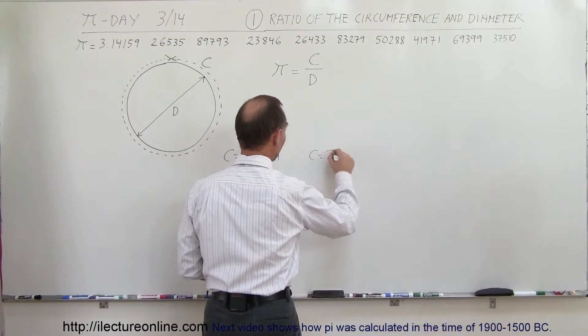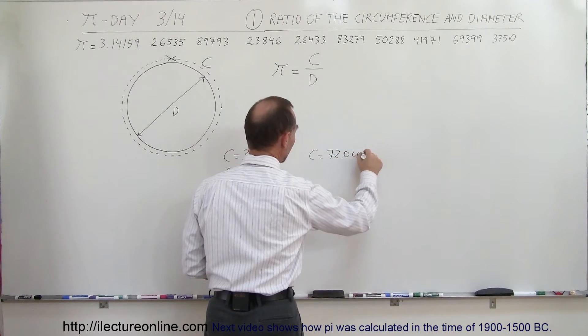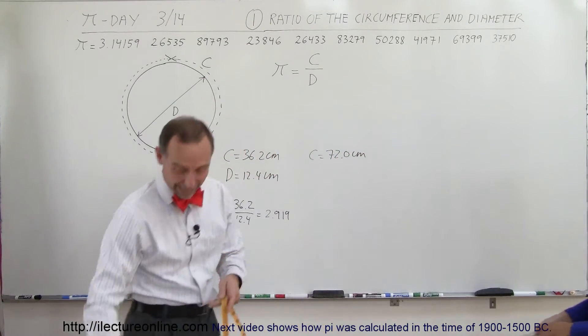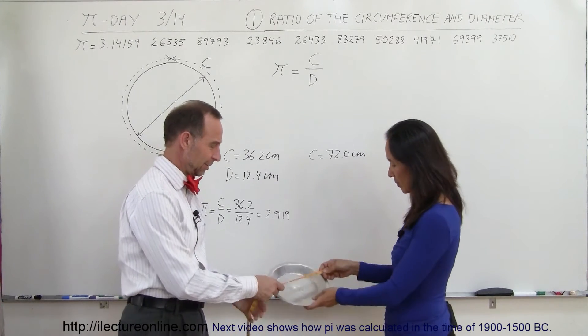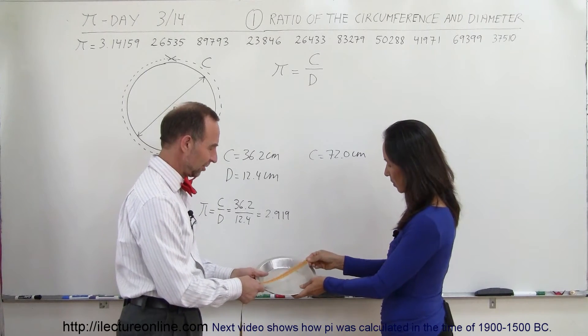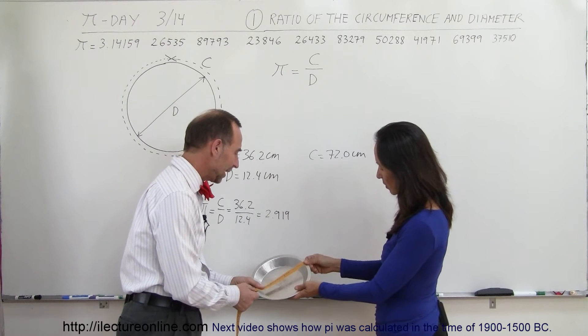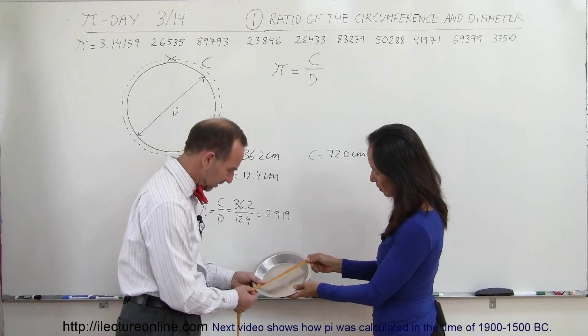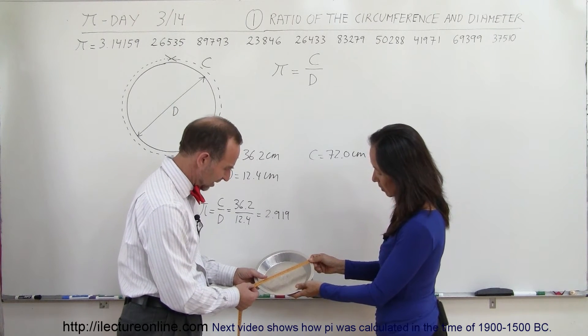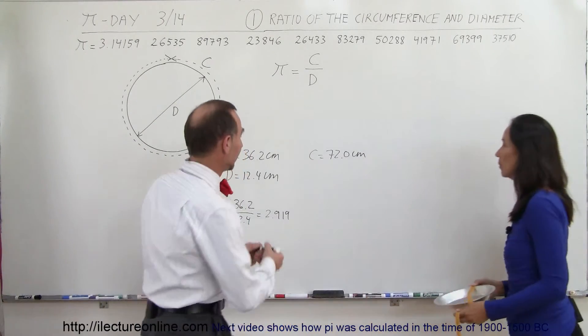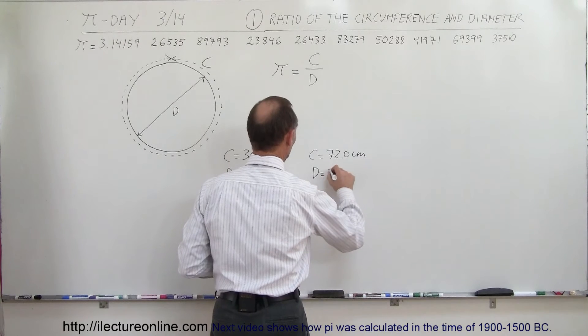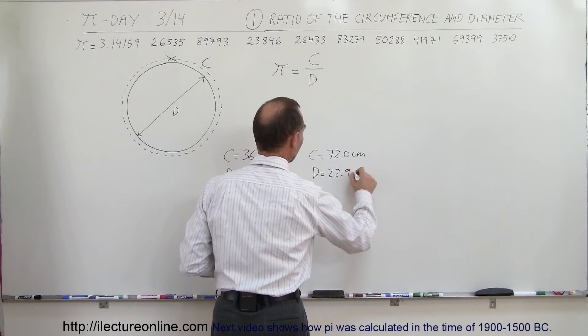C equals 72.0 centimeters. And now we have to find the diameter. Let's turn it around, we want to do centimeters. Right at the edge, right there, and right here. It looks like 22.9 centimeters. Diameter equals 22.9 centimeters.